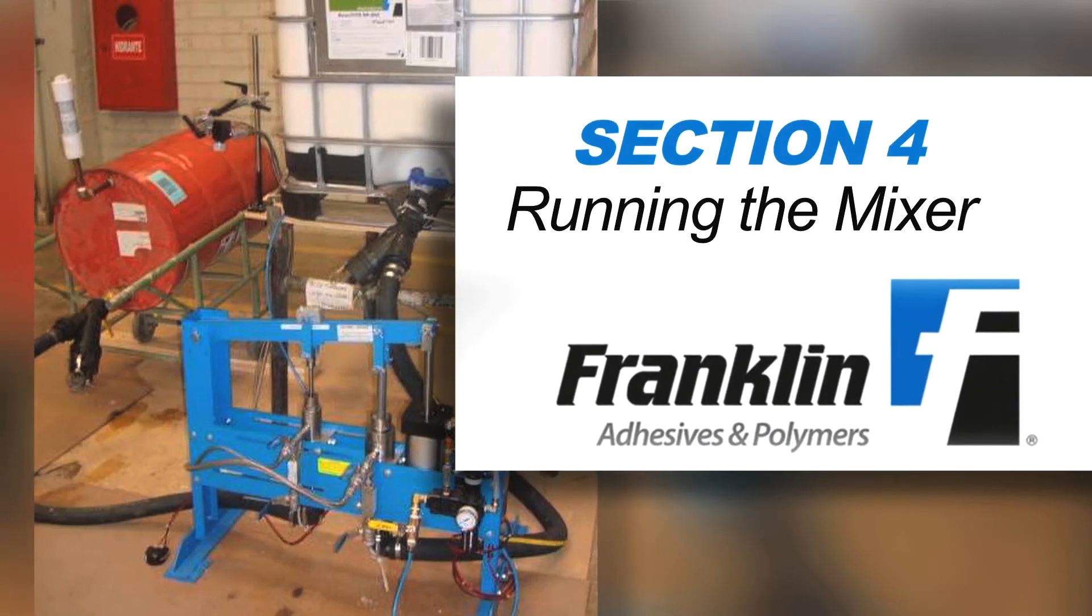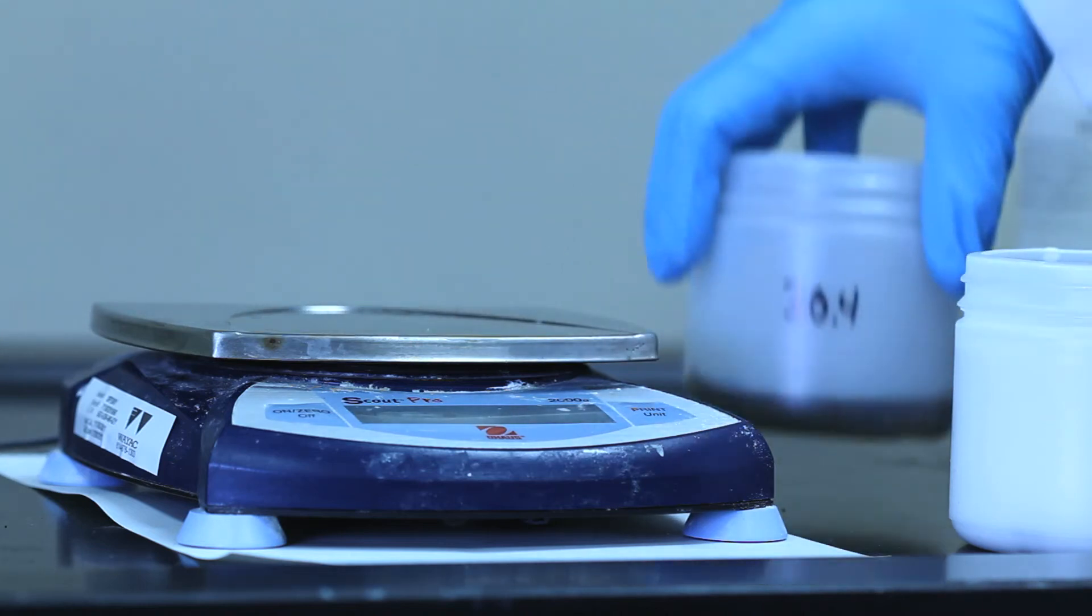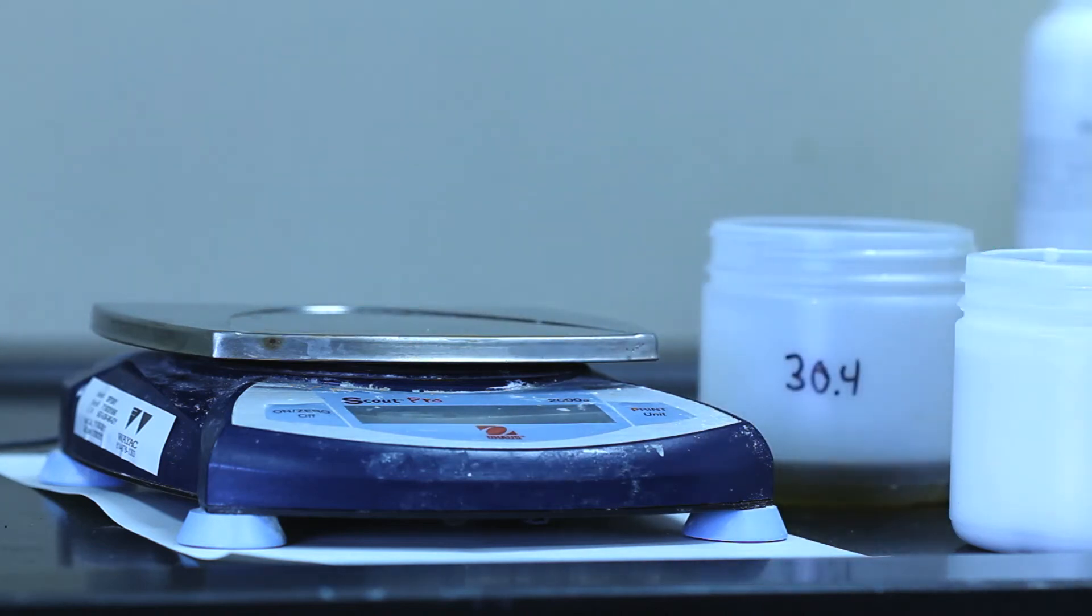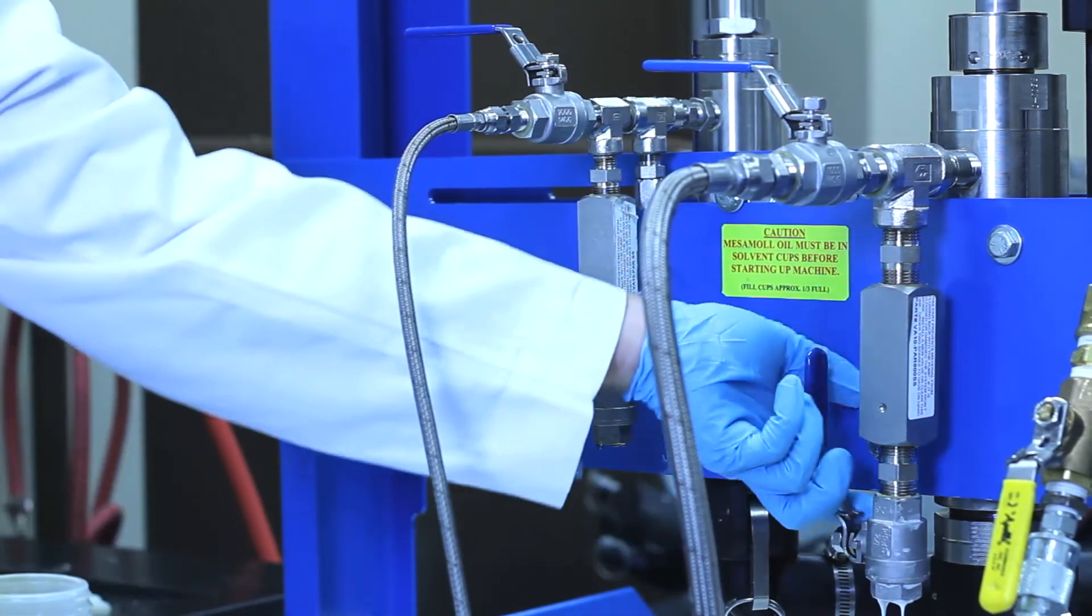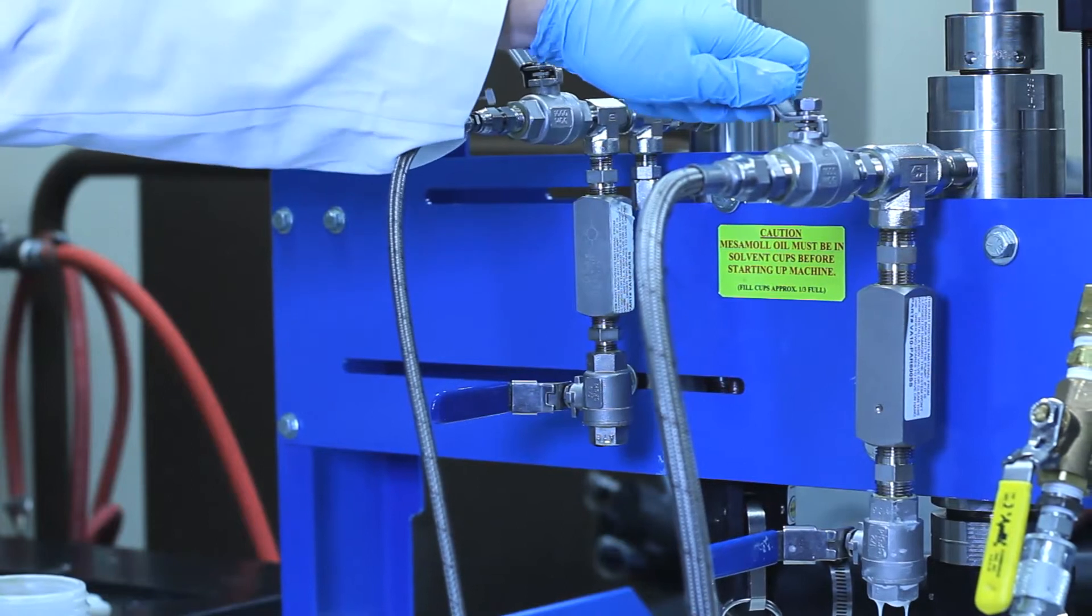Section 4. Running the Mixer. After confirming the ratio is correct in Section 3, allow the minimal material in the pipe to drain and close the ratio check ball valves. Then open the resin and hardener ball valves on the top of the tee.